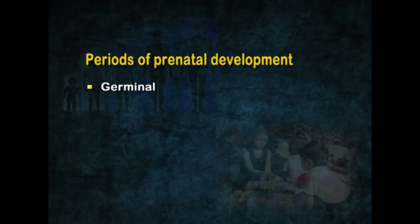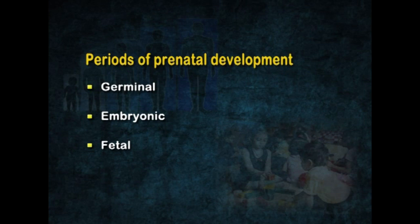Prenatal development can be divided into three periods: the germinal, the embryonic, and the fetal stages. An especially important and fascinating aspect of the prenatal period is the development of the brain.